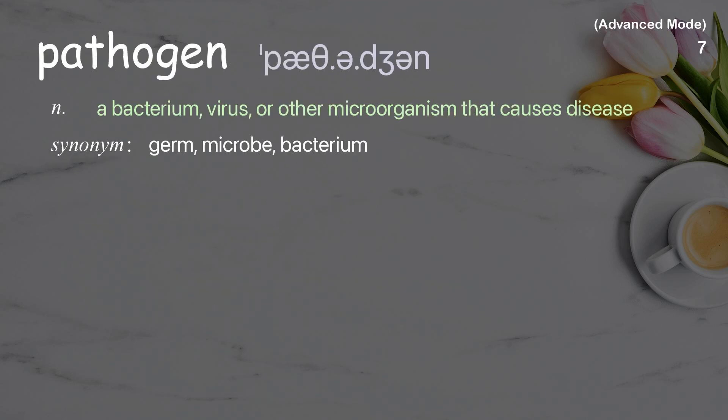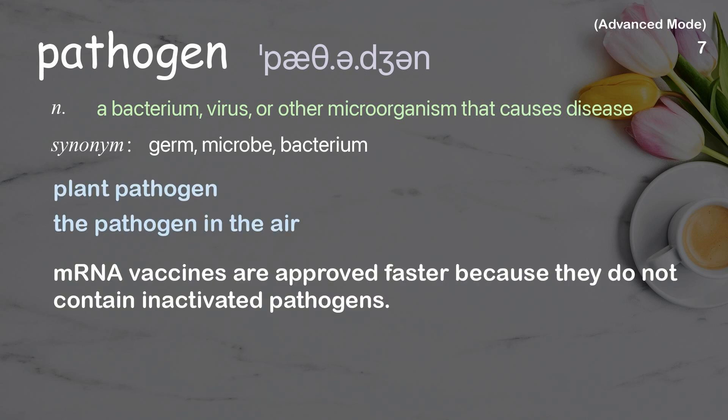Pathogen: a bacterium, virus, or other microorganism that causes disease. Examples: plant pathogen, the pathogen in the air. mRNA vaccines are approved faster because they do not contain inactivated pathogens.